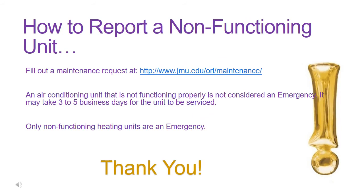To report a non-functioning unit, you can fill a maintenance request at jmu.edu.orl.maintenance. An air conditioning unit that is not functioning properly is not considered an emergency maintenance request — it may take 3 to 5 business days for the unit to be serviced. Only non-functioning heating units are considered an emergency maintenance request. Thank you and have a great day!